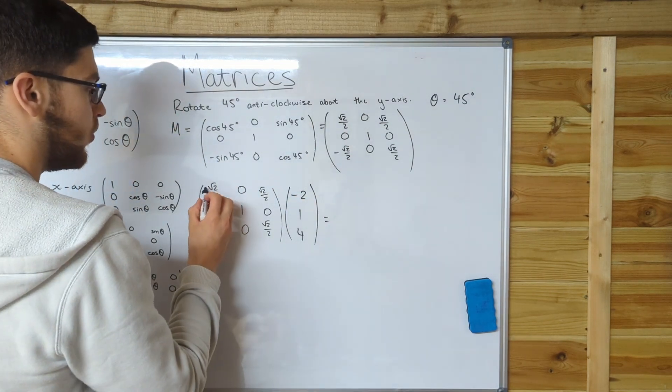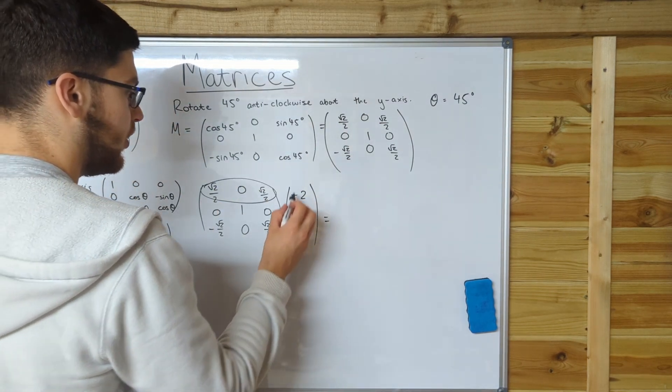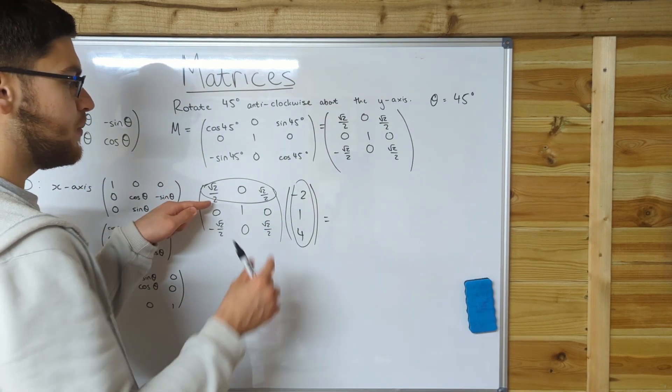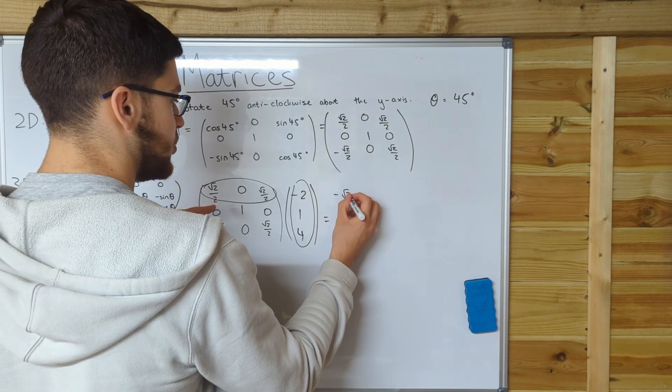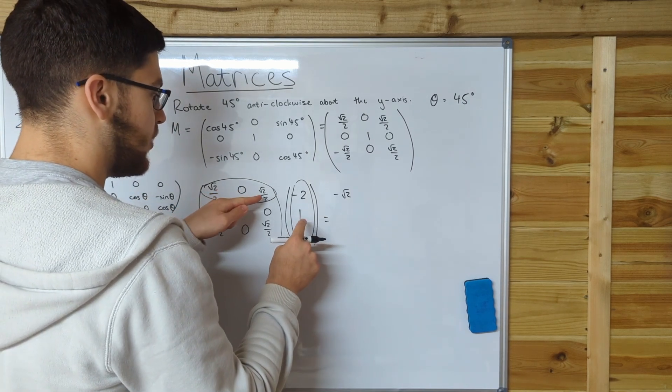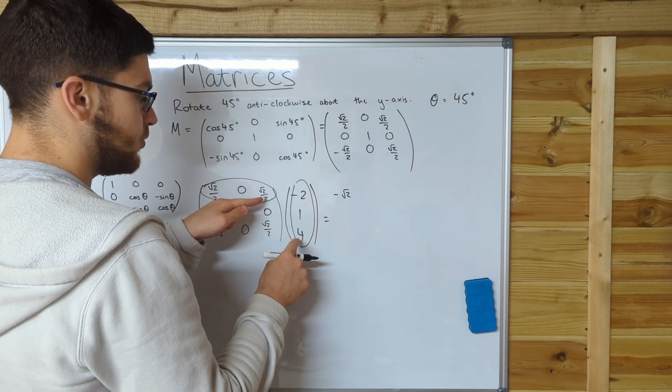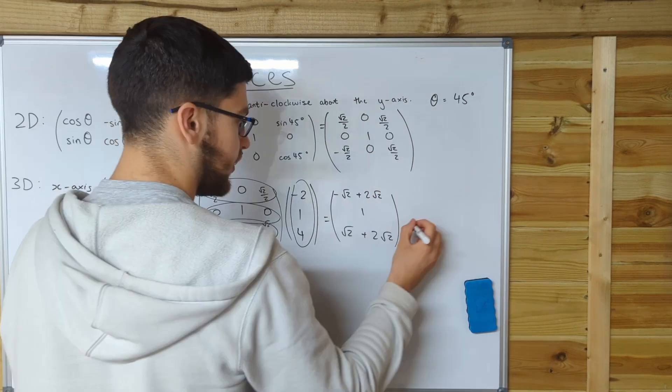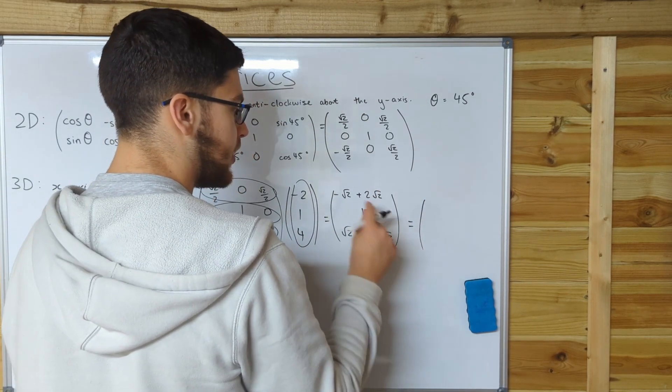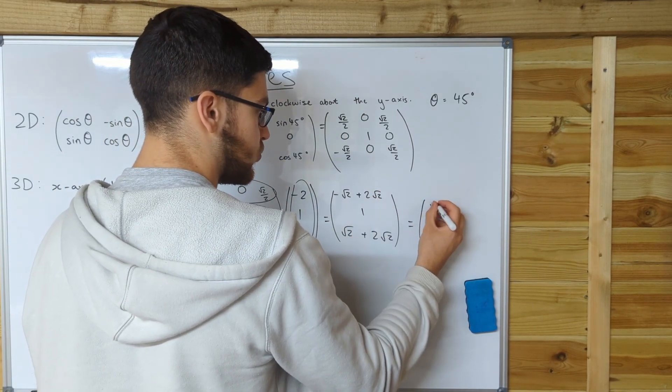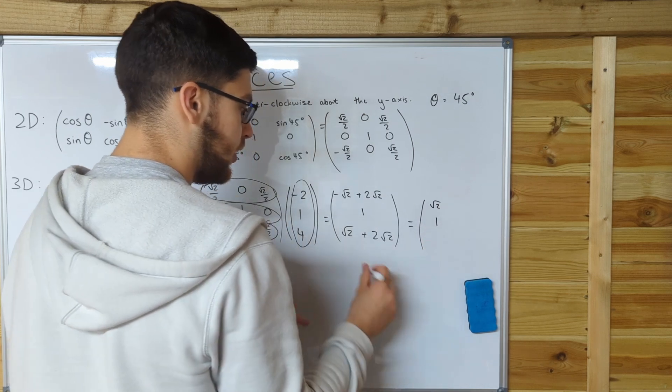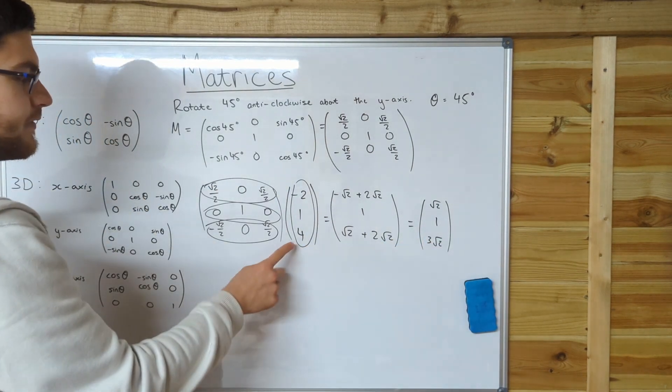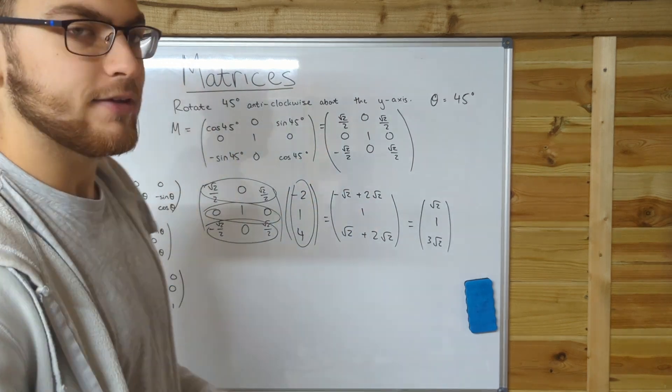So just like last time, we're going to do the rows of the first one, multiply by the columns of the second one. So root 2 over 2 times minus 2 is minus root 2. 0 times 1 is 0. And root 2 over 2 times 4 is plus 2 root 2. Now once we simplify that, we get that cancels to make just 1 root 2. That's 1. And that is 3 root 2. So that point there is that point just rotated 45 degrees about the y-axis. Hopefully you understood that. Harry!